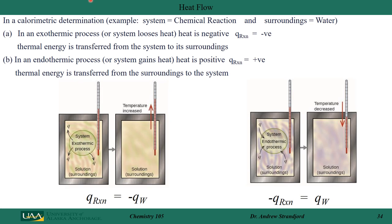Let's look at an example of a chemical reaction with heat flow. Our system is the chemical reaction, carried out in water, which is our surroundings. We can have an exothermic process, where the chemical reaction loses heat — meaning the heat transfer of the reaction is negative — or an endothermic process, where heat must be put into the system, making the heat flow of the reaction a positive value. The system gains heat. Keep in mind what is your system and what are your surroundings.